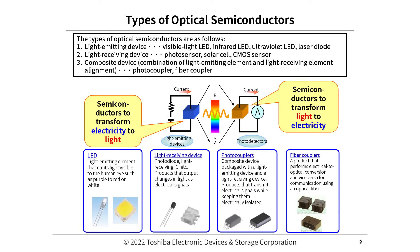Types of optical semiconductors. The types of optical semiconductors are as follows. 1. Light Emitting Devices: visible light LED, infrared LED, ultraviolet LED, laser diode. 2. Light Receiving Devices: photosensor, solar cell, CMOS sensor. 3. Composite Devices: a combination of light emitting element and light receiving element — photocoupler, fiber coupler.